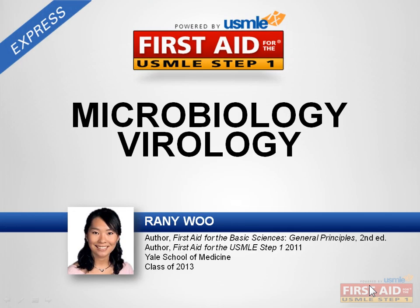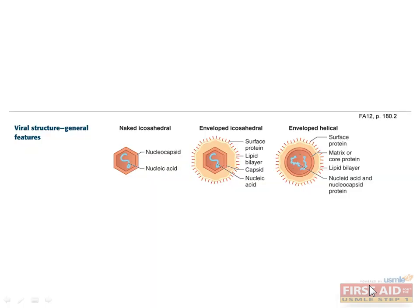Next, we'll discuss the virology section of microbiology. Viruses are obligate intracellular parasites that can only replicate using the cellular machinery of a host cell. All viruses are made of genetic material encased within a protein coat called a capsid. Some virus capsids may also be surrounded by a host lipoprotein membrane with virus-encoded glycoproteins — these are known as enveloped viruses — while others are composed only of genome and capsid, known as naked viruses.